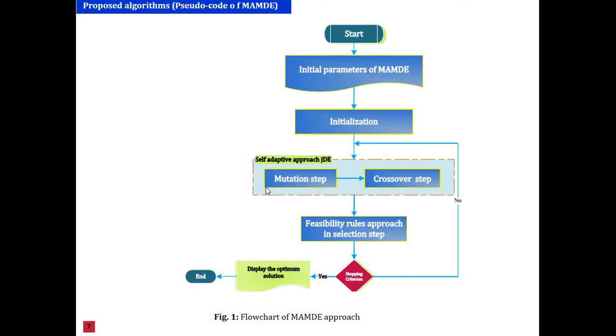To avoid the manual choice of mutation factors and the crossover factor, the self-adaptive approach is used. During the selection step, the feasible point approach is employed instead of the conventional selection. When comparing between two solutions in the feasible region, the one with a better fitness value is selected. The procedure mutation steps, crossover, and selection is repeated until satisfaction criterion is satisfied.